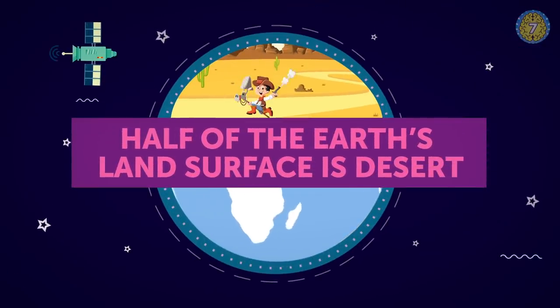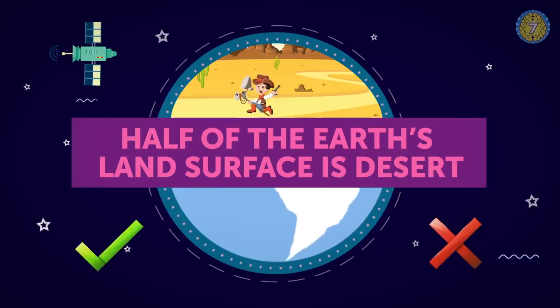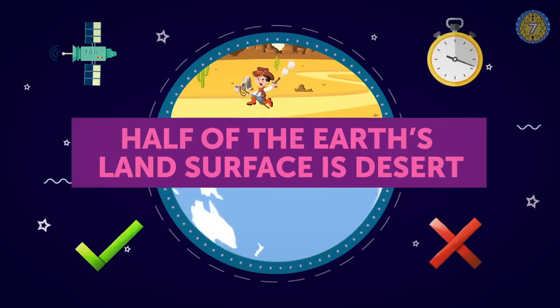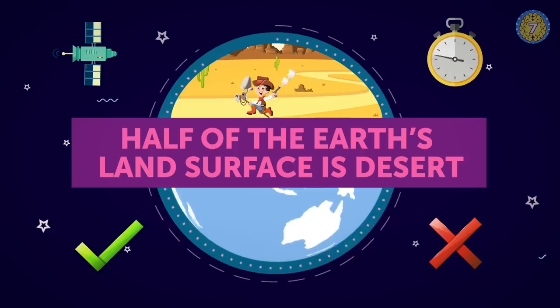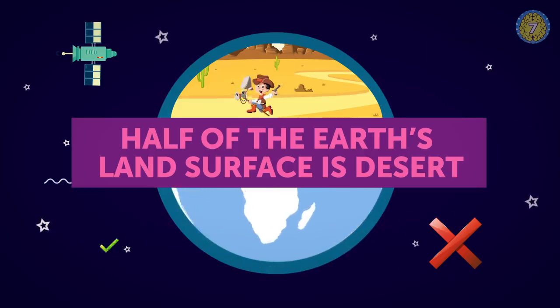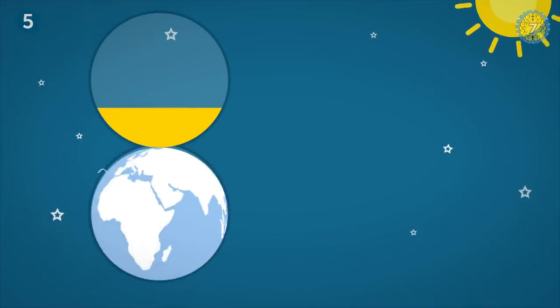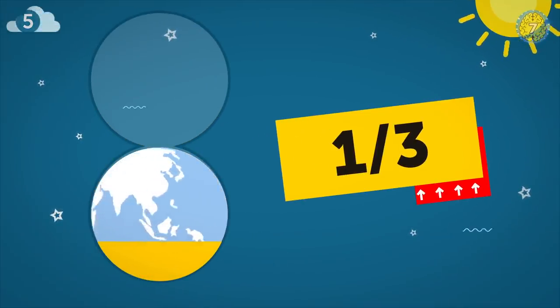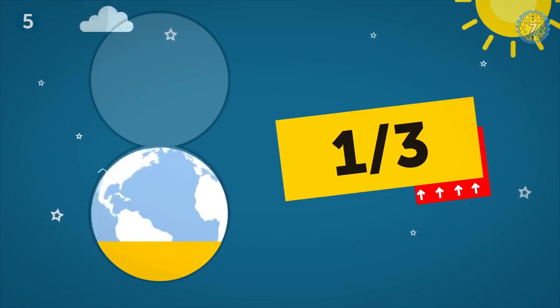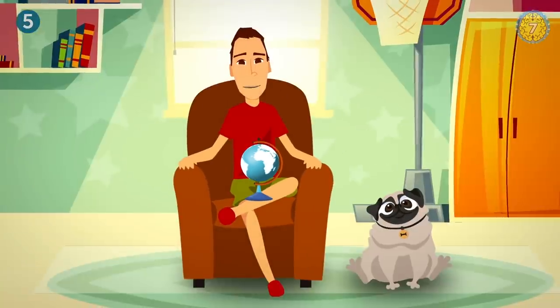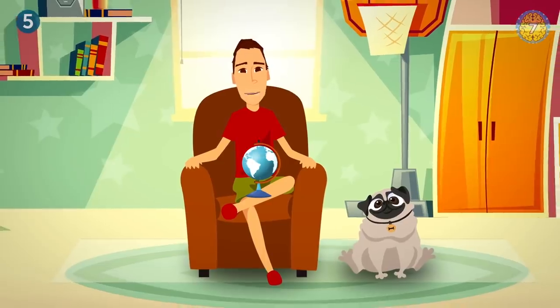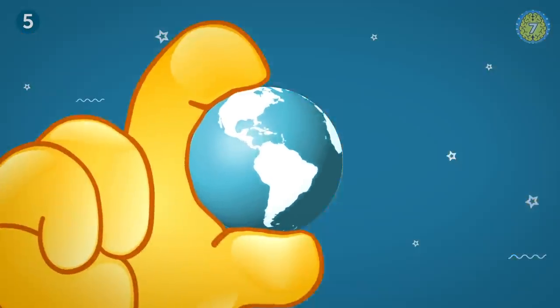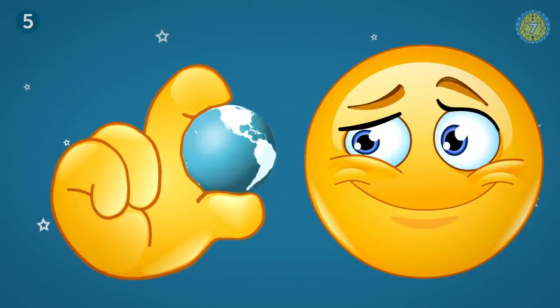Half of the earth's land surface is desert. Is that true or false? Well, it's false, but not by much. In fact, one-third of our planet is partially or totally desert. What does that mean? Well, it's just another reason for us to take care of the land we actually live on. Just think about how little space we actually have.